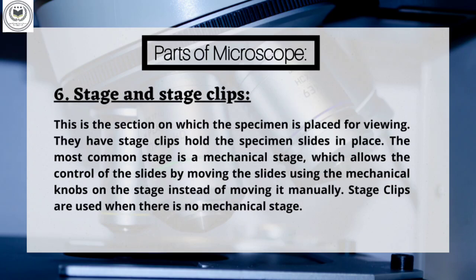Part 6: Stage and stage clips. This is the section on which the specimen is placed for viewing. Stage clips hold the specimen slides in place. The most common stage is a mechanical stage, which allows control of the slides using mechanical knobs instead of moving it manually. Stage clips are used when there is no mechanical stage, requiring the viewer to move the slide manually to view different sections of the specimen.